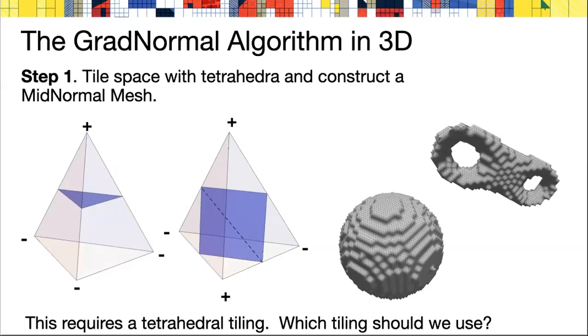If the surface separates one vertex of a tetrahedron from the other three, then we'll have a single triangle. If it separates two vertices from the other two, then we'll construct two triangles which together form a quadrilateral. All the vertices are located at midpoints of edges. The triangles fit together to form surfaces like the one shown at the right. These are midnormal meshes of genus two and of genus zero.